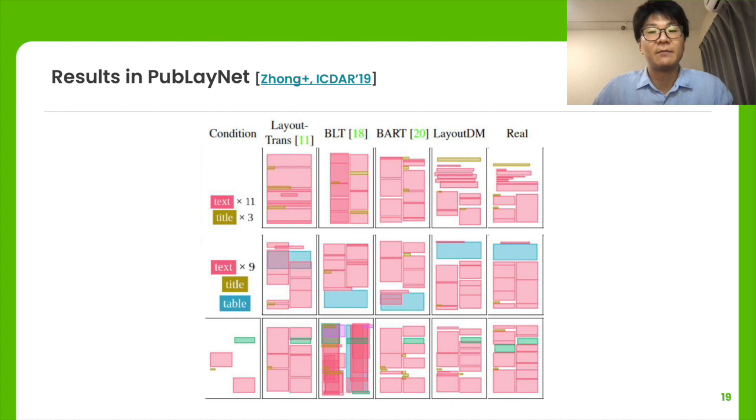Here, we show some results in PubLayNet. PubLayNet is a dataset of research papers containing five element categories, such as table, image, and text. We can see the same trend.